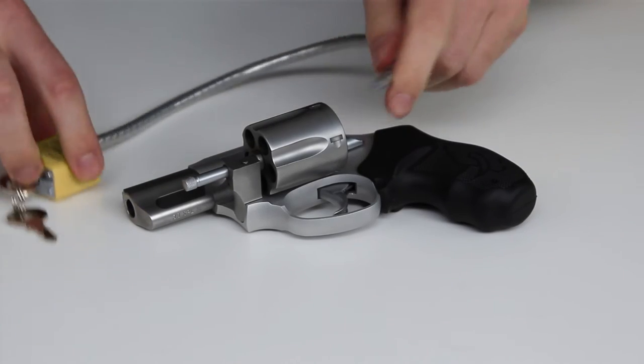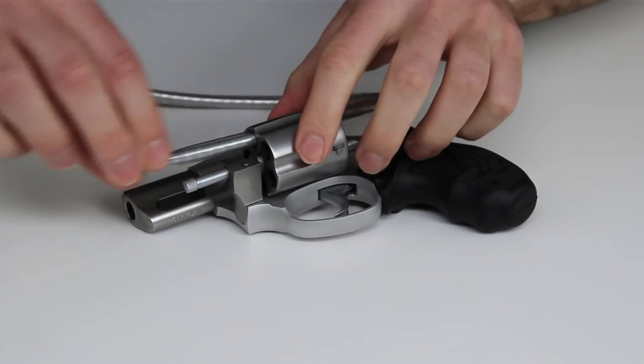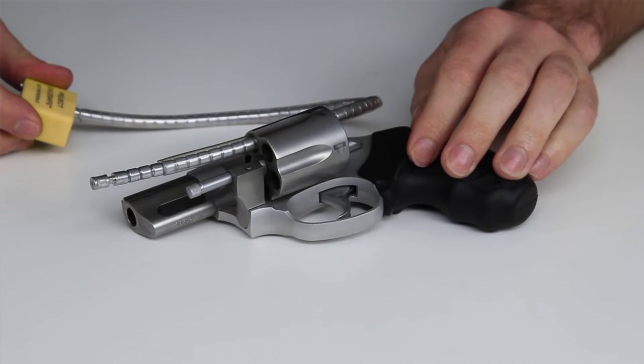To install a gun lock on a revolver, run the cable through the barrel or the open cylinder chamber to make the gun impossible to load and fire.